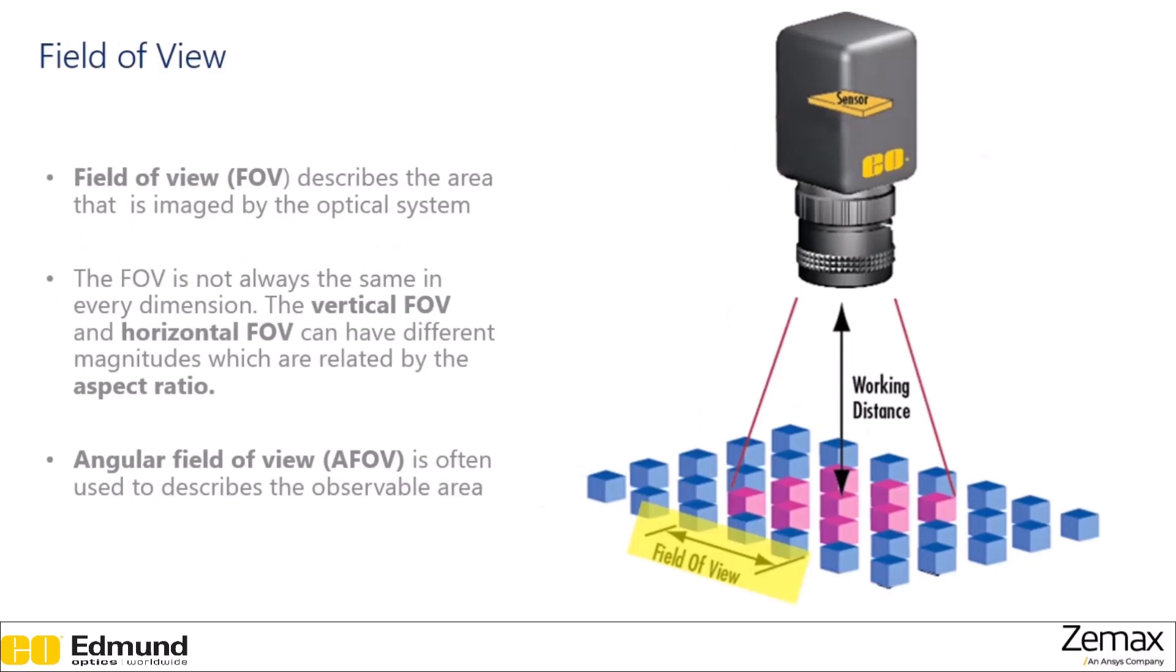Field of view describes the area that is imaged by the optical system. The field of view is not always the same in every dimension. In fact, it's usually not. The vertical field of view and the horizontal field of view have different magnitudes which are related by the aspect ratio. Lens parameters are generally given in the horizontal field of view, so if you then want to figure out your vertical field of view parameters, that's where the aspect ratio can convert from one to the other.